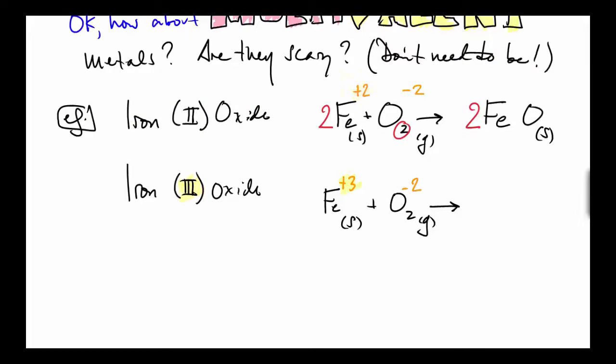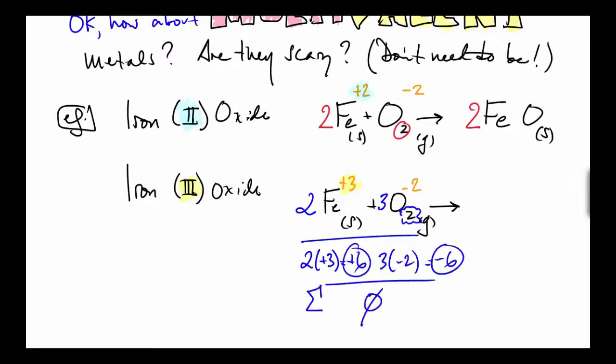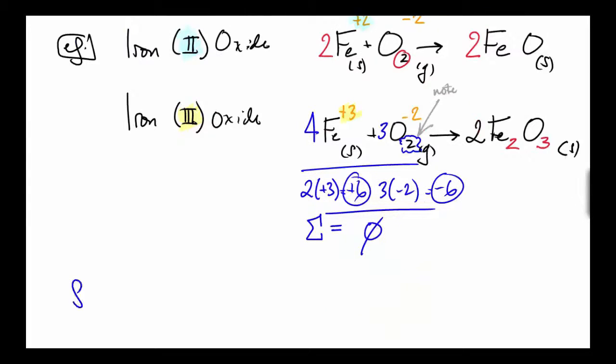When you look at iron(III) oxide, there's iron plus three, oxygen's got a minus two charge. There's two of those, you'll need two of the iron plus threes and three of the oxygens at minus two. Look at this: two plus threes is plus six, three minus twos is negative six—that's a net charge of zero. Notice you get Fe2O3. Just be careful you balance properly, and four irons are needed.